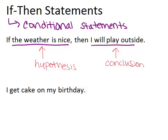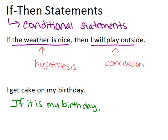You have to think about what's the cause and effect in this situation. 'I get cake on my birthday' — the cause or the condition is that it's my birthday, and the effect, what happens, the conclusion, is that I get cake. So you could rewrite this sentence as: if it is my birthday — that's the hypothesis, or the thing that is causing something else to happen — then the result, the conclusion, is: I get cake. So, if it is my birthday, then I get cake.